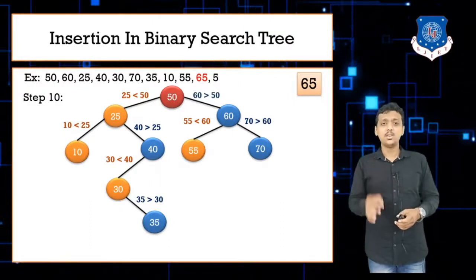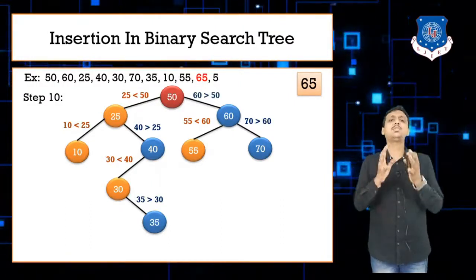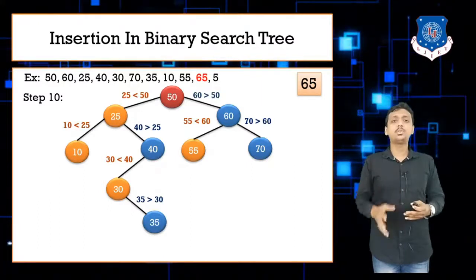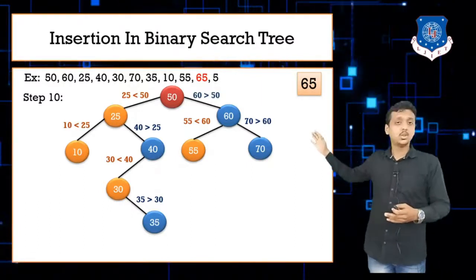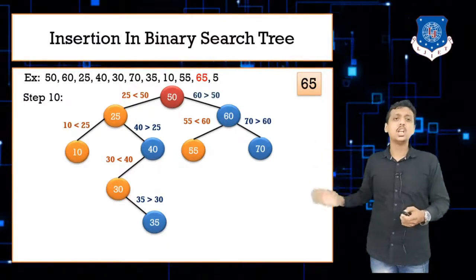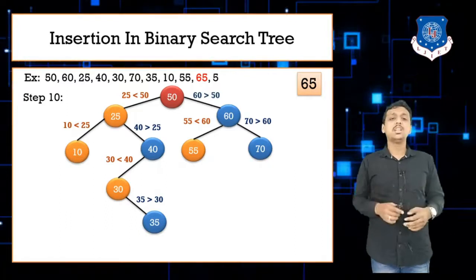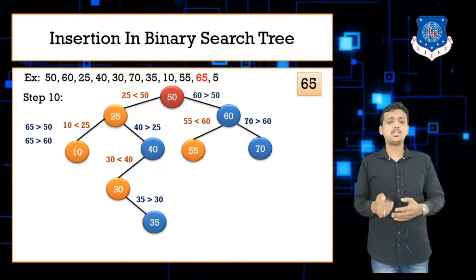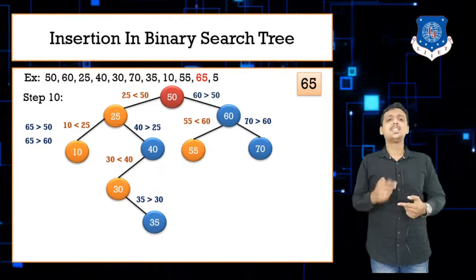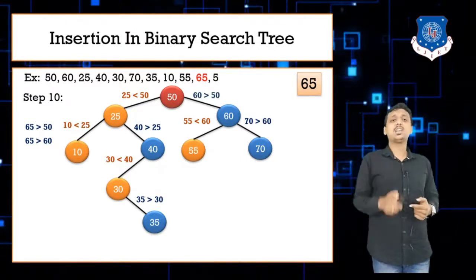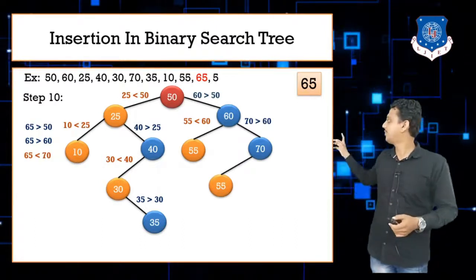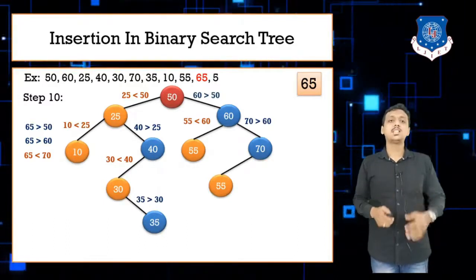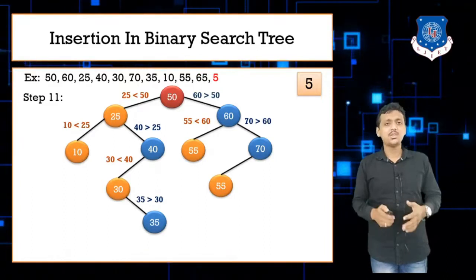Step 10: next value is 65. Compare 65 with root node 50 — 65 is greater than 50, so move right. Compare 65 with 60 — 65 is greater than 60, so move right. Compare 65 with 70 — 65 is less than 70, so insert 65 on the left side of 70.